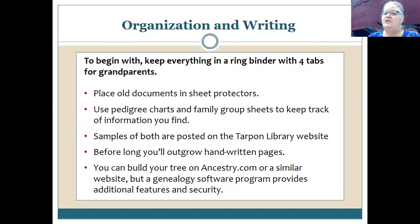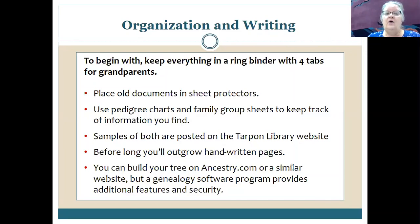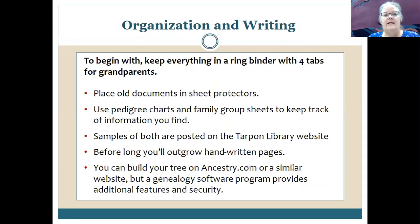As you gather information, you'll soon have a mountain of paper and need an organizational method. Start with a ring binder with four tabs for your grandparents — gather documents you already have at home. Put older documents in sheet protectors. Use pedigree charts and family group sheets to track information; printable versions are on our website. Before long you'll outgrow handwritten pages and want an automated system — you can build a tree on Ancestry.com, but a genealogy software program offers more features and security.